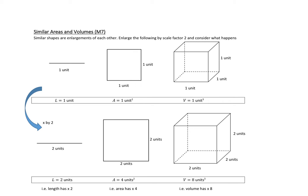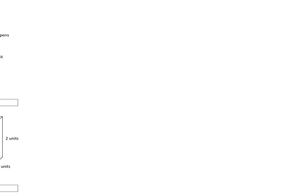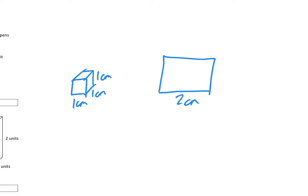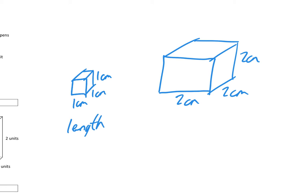We're going to look at the scale factor for area and scale factor for length. Looking at this shape here, I'm going to draw a 1cm cube — that's 1cm by 1cm by 1cm. Then I'm going to double the size of it lengthwise so it becomes 2cm by 2cm by 2cm. For length, the scale factor is k, and k is equal to 2 because you go from 1 to 2, so you're multiplying by 2.